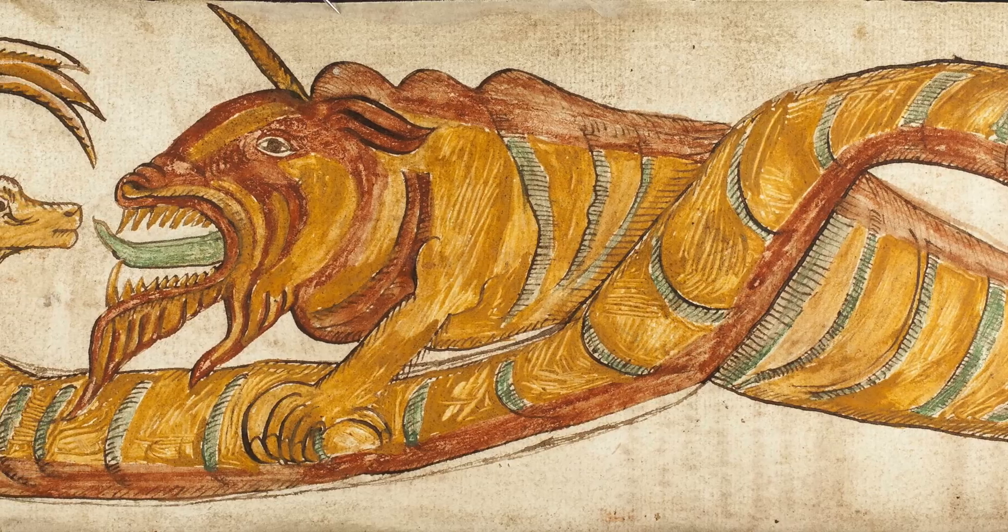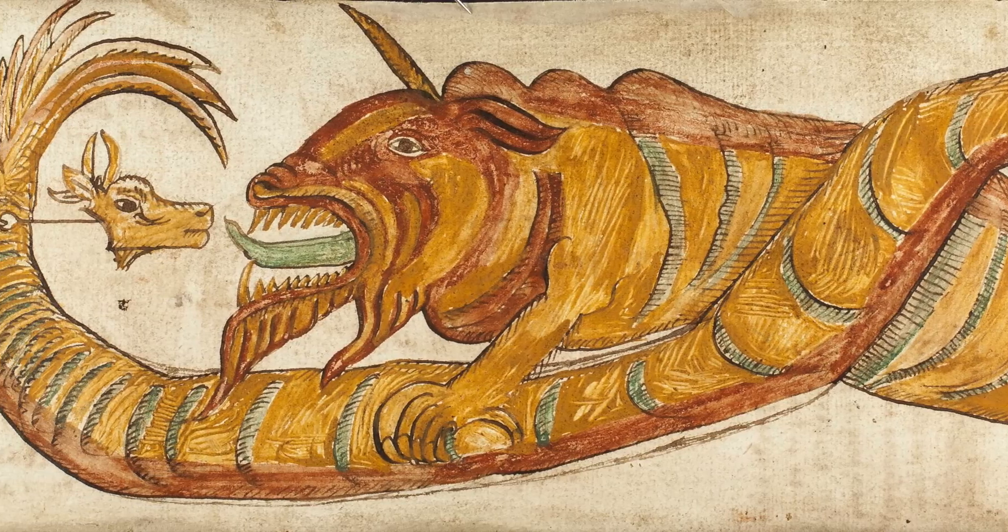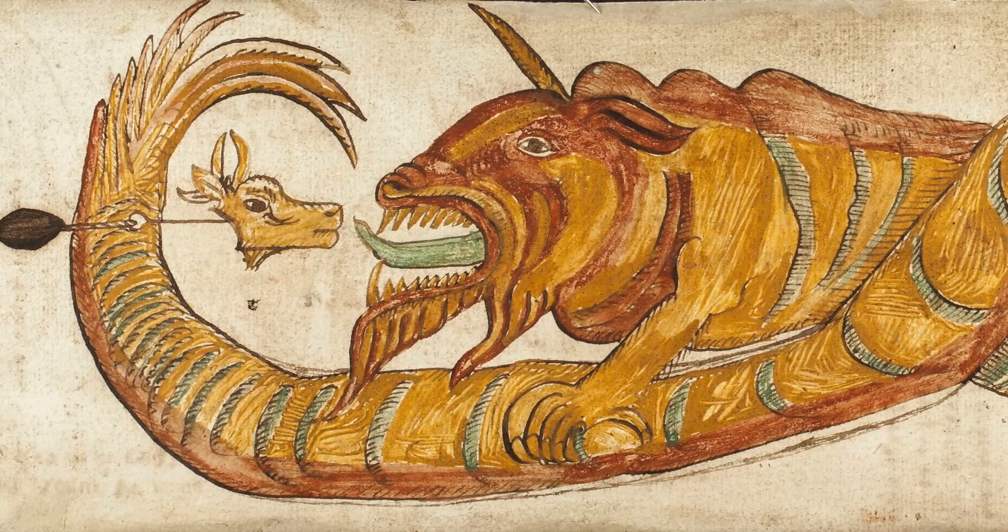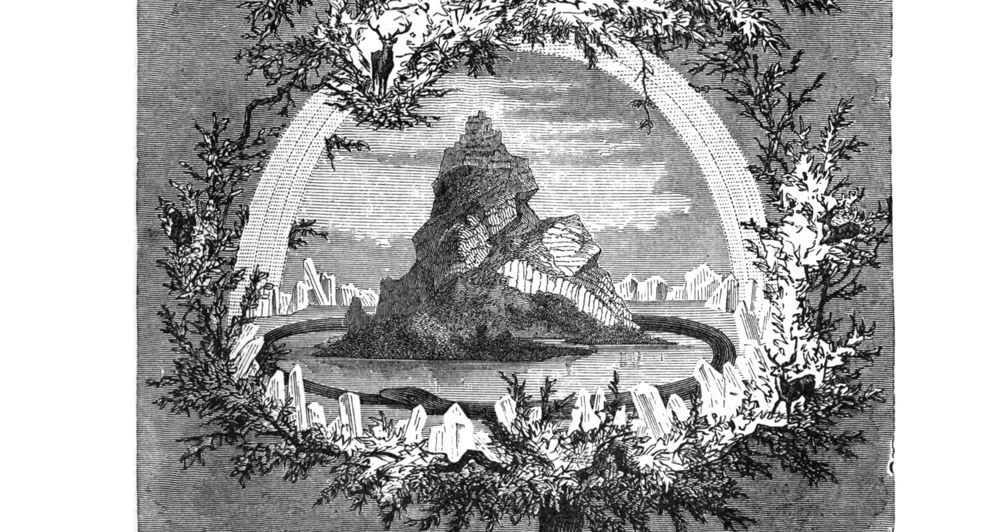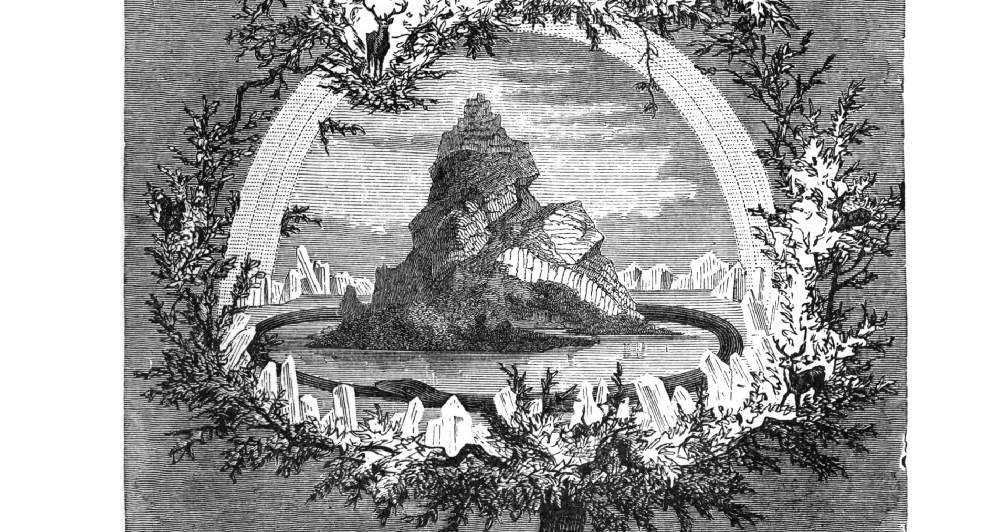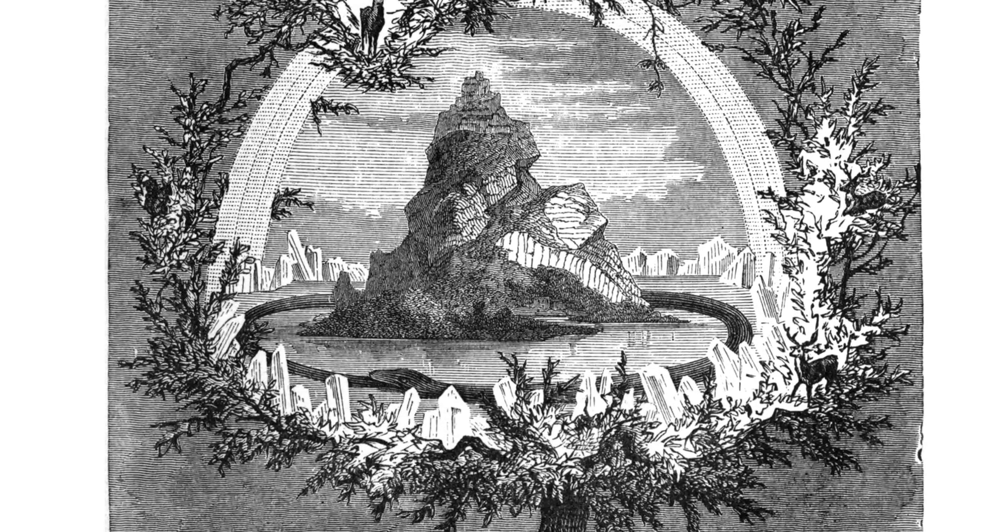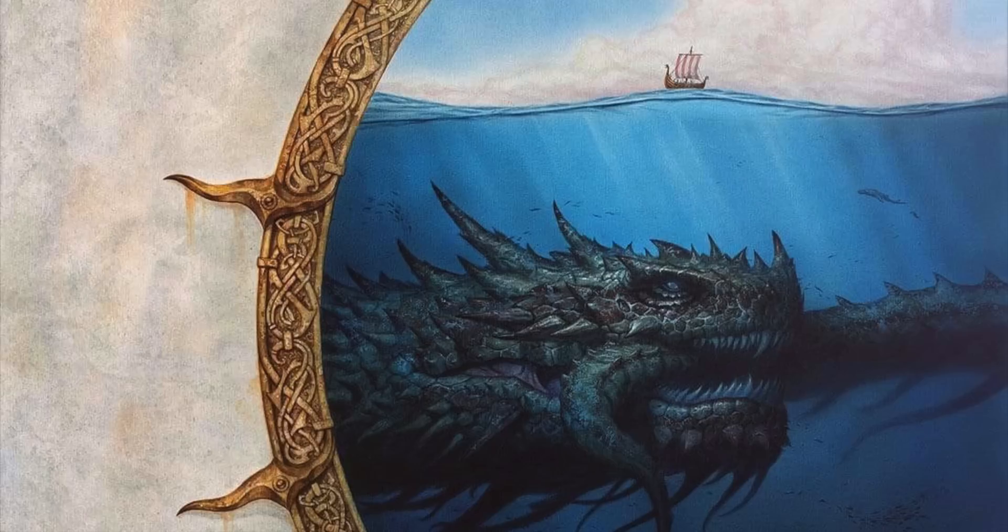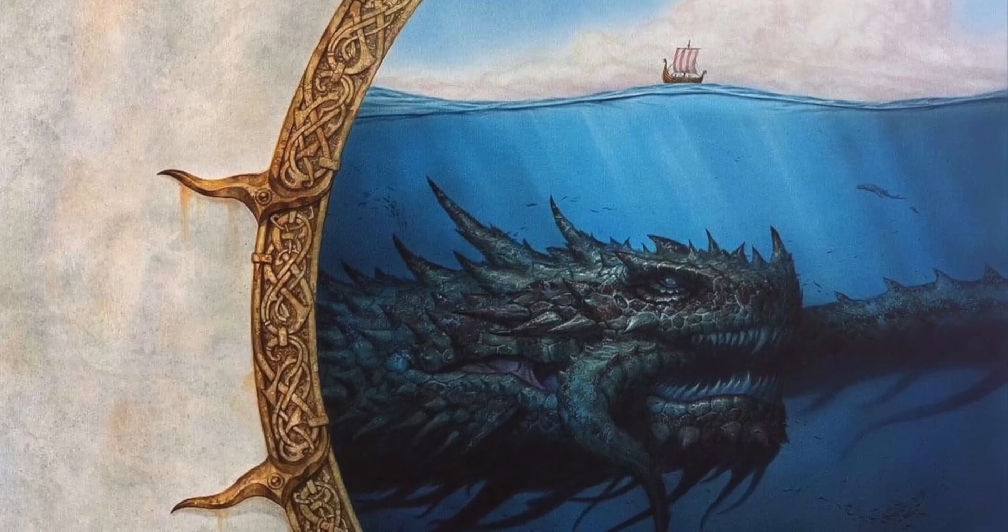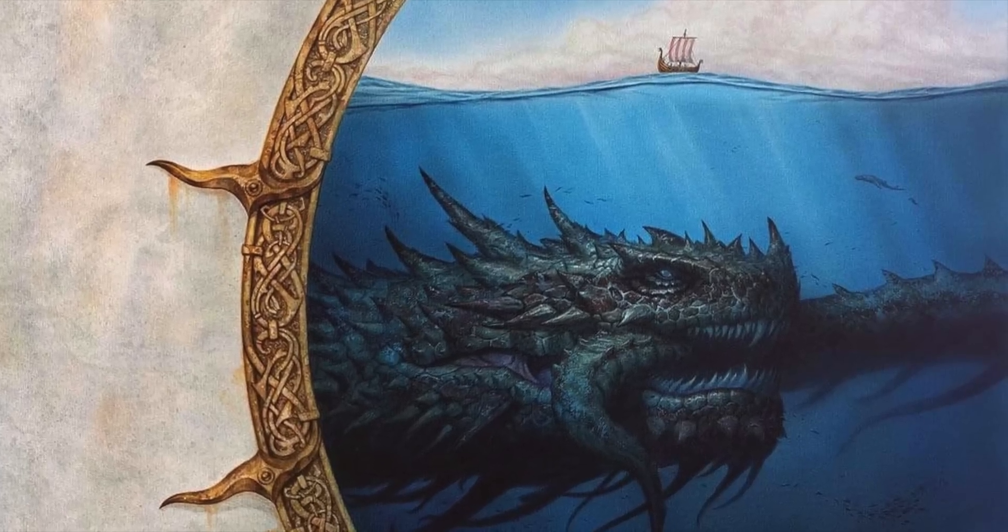In Norse mythology, the Ouroboros takes the form of Jormungandr, a sea serpent who grows to such immense size that it can encircle the earth, i.e. Midgard, grasping its own tail in its jaws. When Jormungandr releases its tail, this will trigger Ragnarok, the ultimate battle, signaling the end of the world.